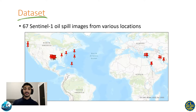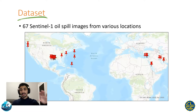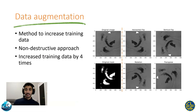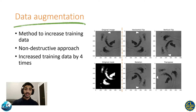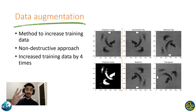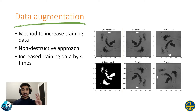As for my dataset, I collected 67 Sentinel-1 oil spill images from various locations around the world. I then had to increase my training data because deep learning models perform better with more training data. So I used four different data augmentation techniques: horizontal flipping, vertical flipping, rotation, and transposition of images.